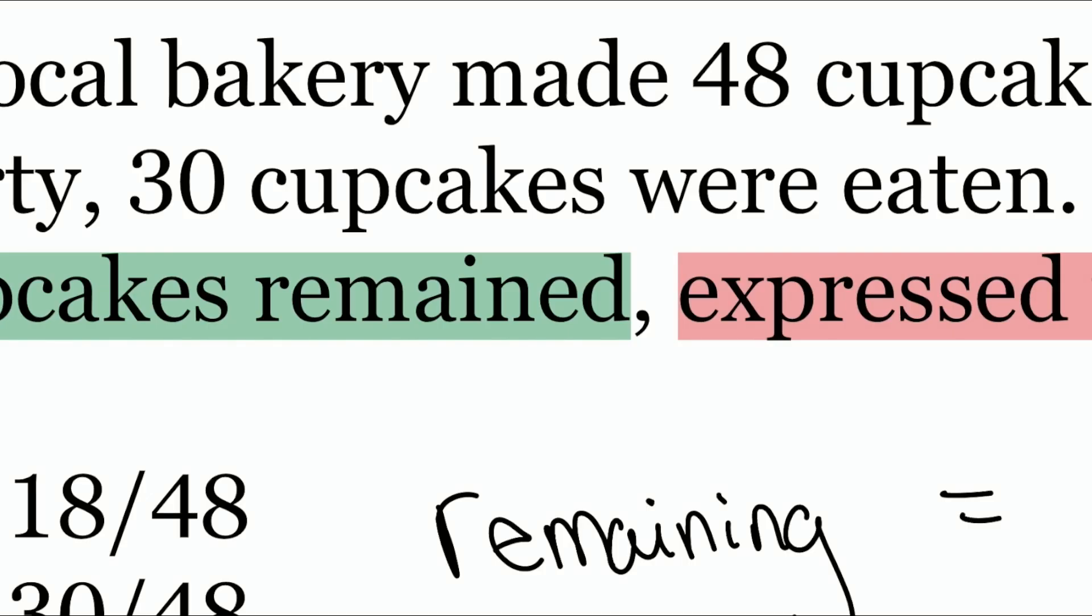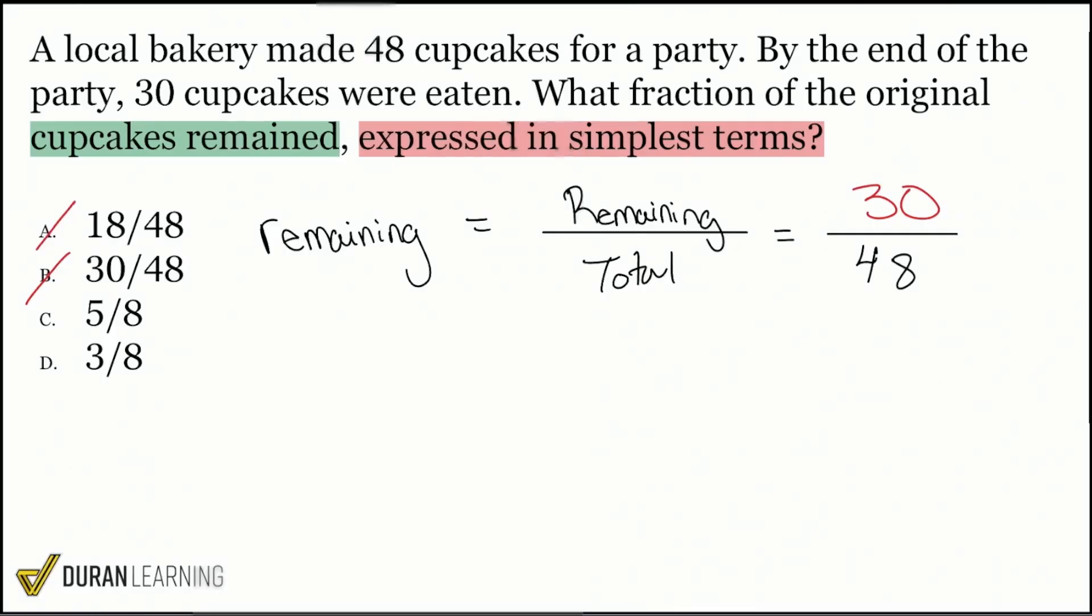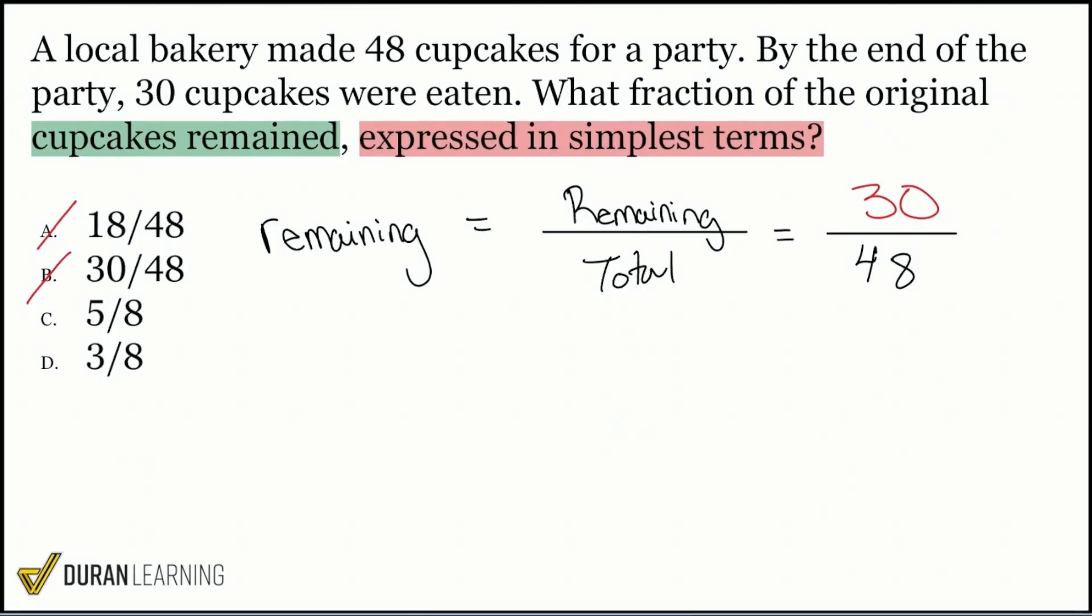What this means is 30 were eaten. If we had 48 cupcakes at the beginning and then we ate 30, how many are left? 18. Exactly. So it's not 30 that belongs in here. It's going to be 18 because 48 minus 30, that's going to be 18 remaining. And so we will have 18 out of 48.